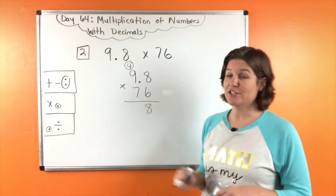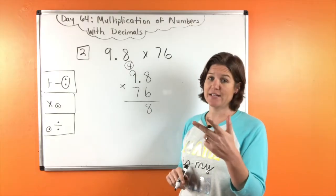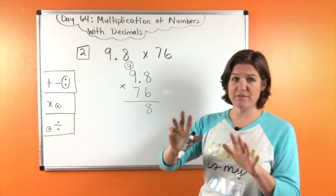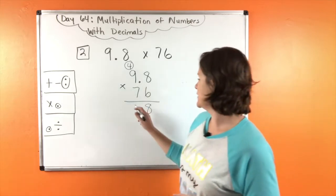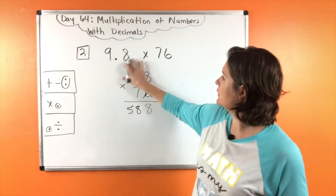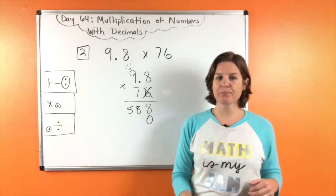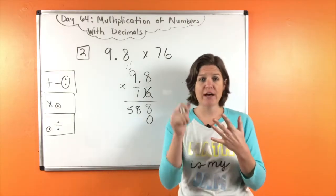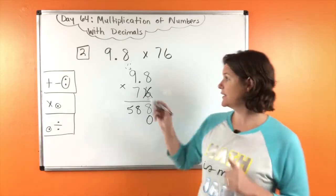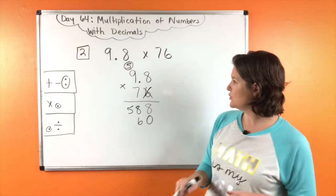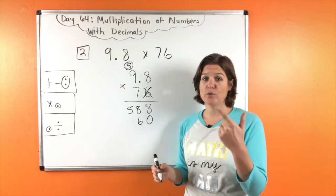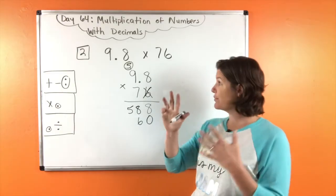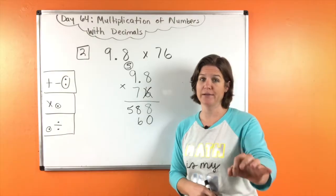Six times nine: six, twelve, eighteen, twenty-four, thirty, thirty-six, forty, forty-eight, fifty-four. Fifty-four plus four would be fifty-eight. Now we cross out, erase, and place a zero. Seven times eight: seven, fourteen, twenty-one, twenty-eight, thirty-five, forty-two, forty-nine, fifty-six. So fifty-six. Seven times nine: seven, fourteen, twenty-one, twenty-eight, thirty-five, forty-two, forty-nine, fifty-six, sixty-three. So sixty-three plus five would be sixty-eight.